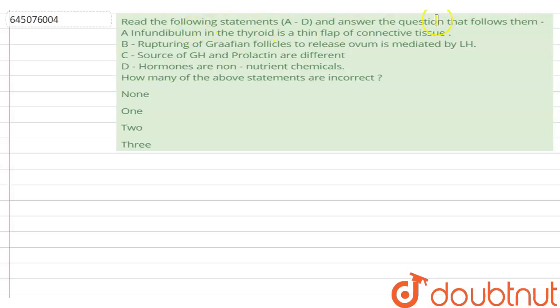Read the following statements A to D and answer the question that follows them: A - Infundibulum in the thyroid is a thin flap of connective tissue. B - Rupturing of Graafian follicles to release ovum is mediated by LH, that is luteinizing hormone. C - The source of growth hormone and prolactin are different. D - Hormones are non-nutrient chemicals. How many of the above statements are incorrect? The options are none, one, two, three.